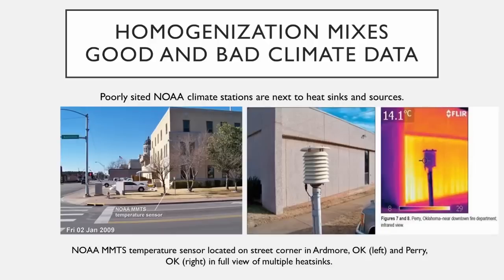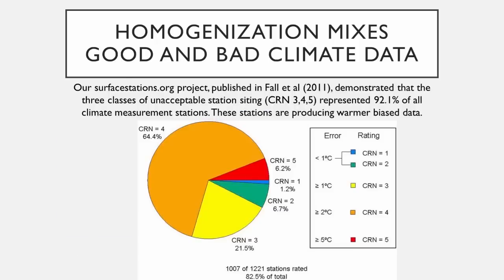When you look at all of the weather stations used for measuring climate around the United States, we published a paper called Fall et al. 2011, and we demonstrated that about 92% of the weather stations in the NOAA network had issues — they were faulty, they were biased. As things got closer to them, they warmed up. For those who have ever stood next to a brick building in the early evening and felt the heat from the sun radiating off of it at night — that's really the effect that's going on here.